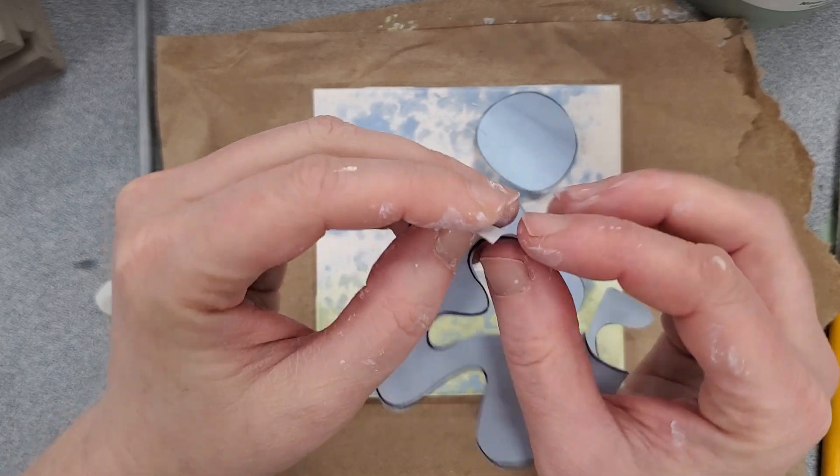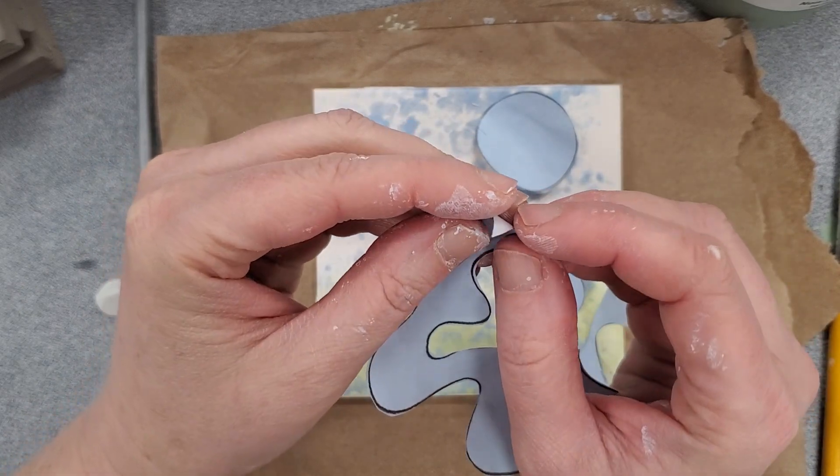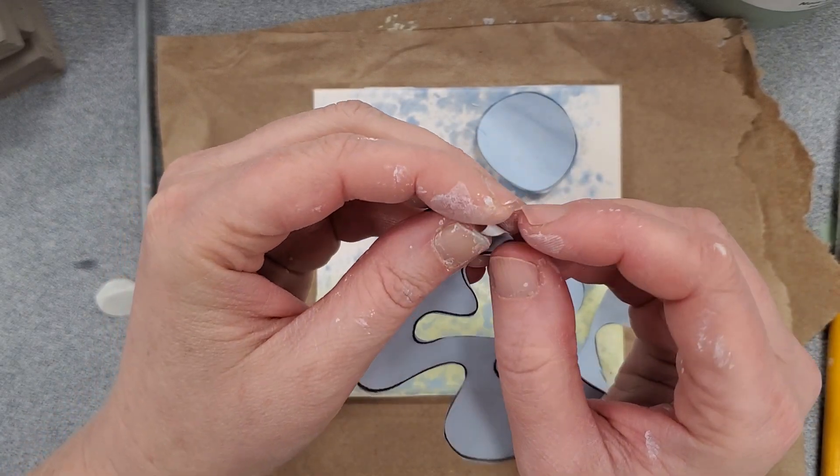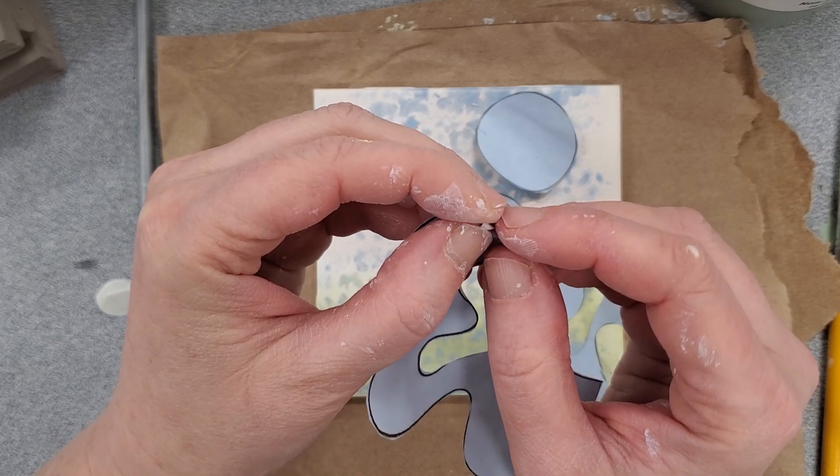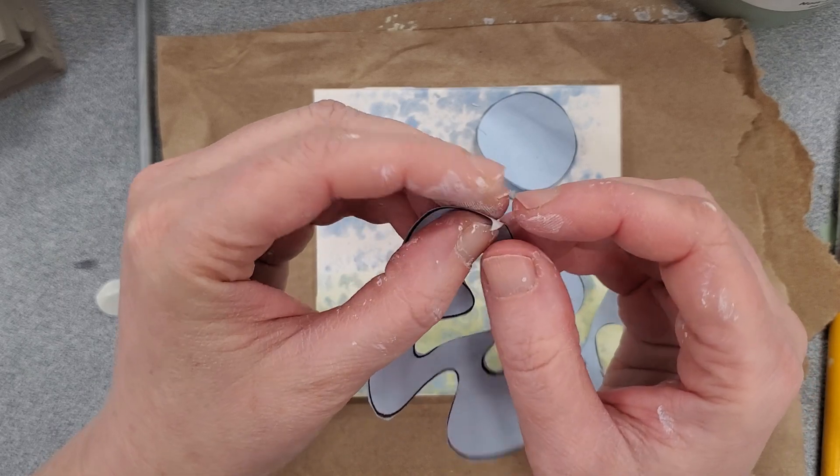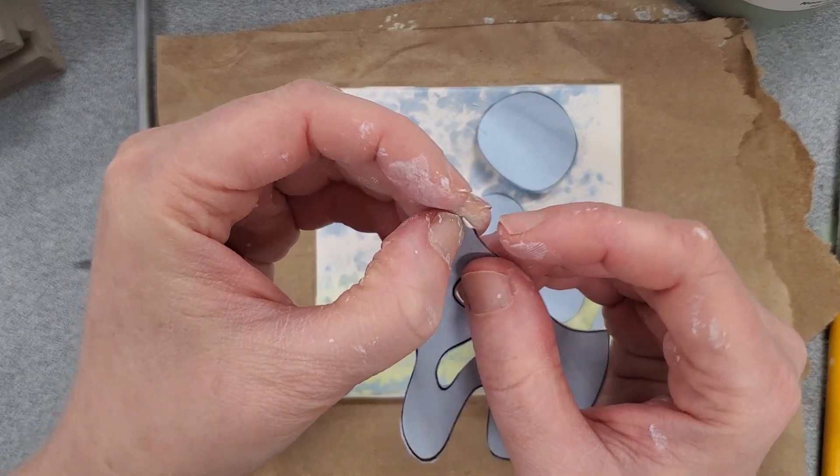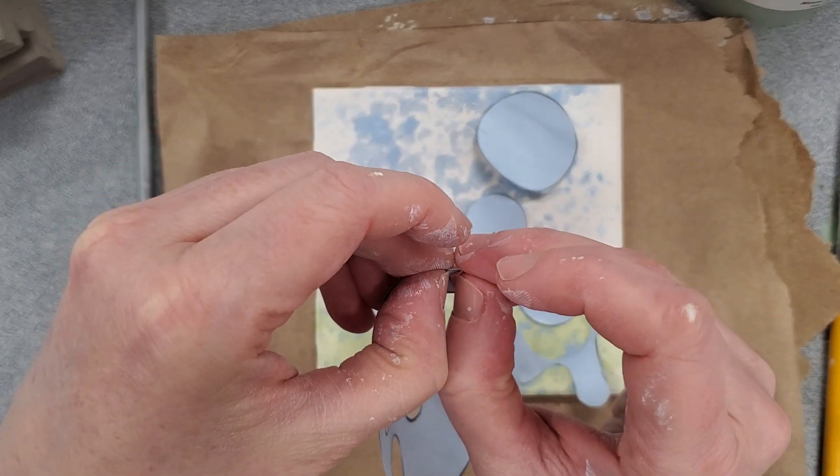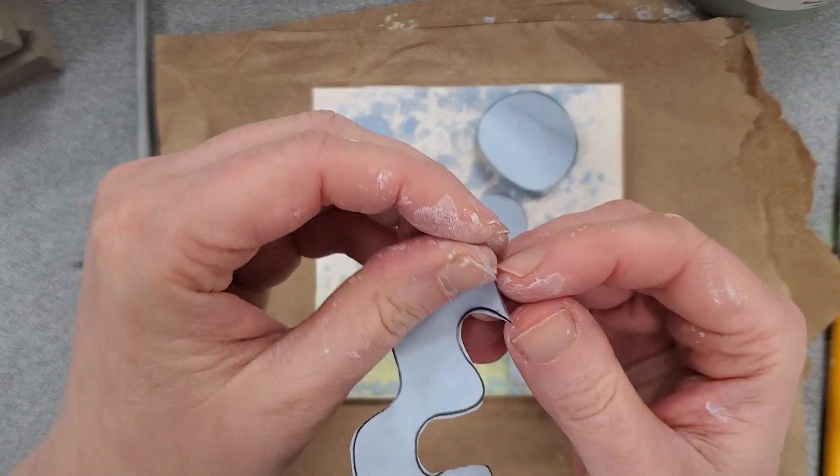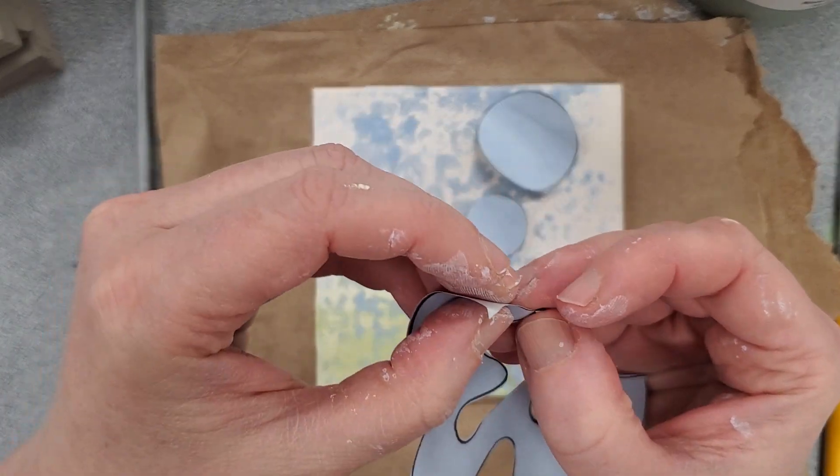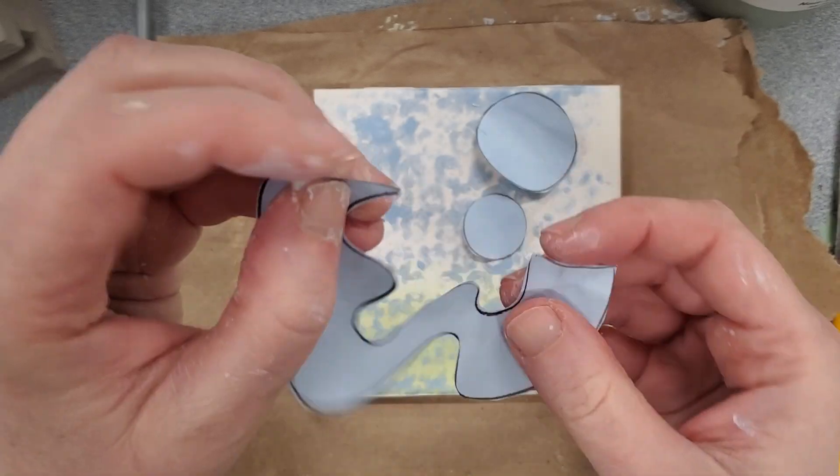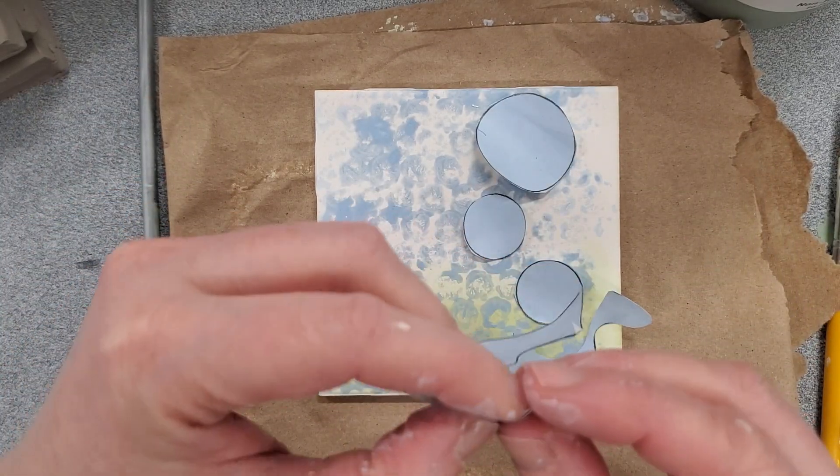Then what I'm going to do is peel off the paper backing of the contact paper. Now this is difficult. If you're on the struggle bus with it, it takes a little bit of time. Best way to start doing this is kind of gently pressing down one of the corners and using your fingernail to peel off the paper backing.